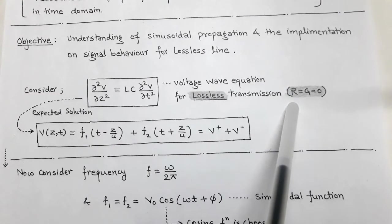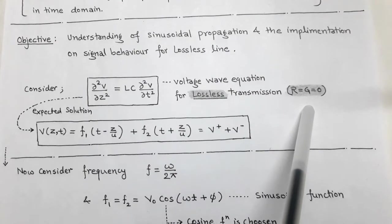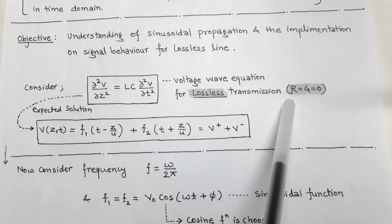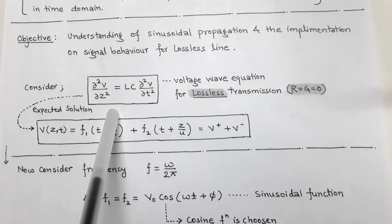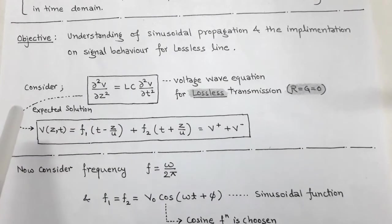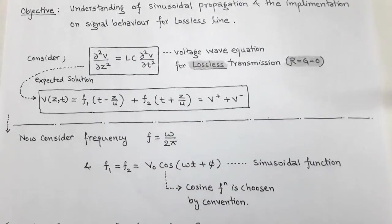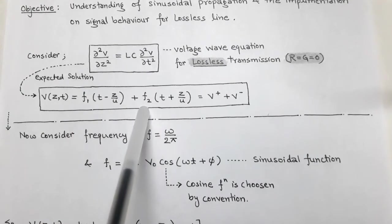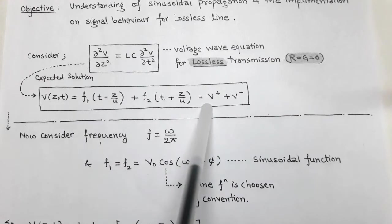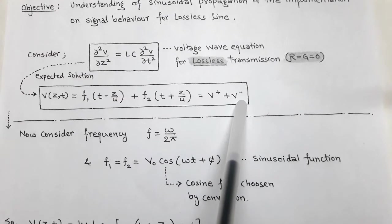Here R is called the series resistance and G is called the shunt conductance of the transmission line, which are responsible for power losses. So for lossless transmission we put R = G = 0 and obtain the voltage wave equation. The expected solution of this second-order equation has two functions F1 and F2, where F1 is called the forward component and F2 is called the backward component of the wave equation.